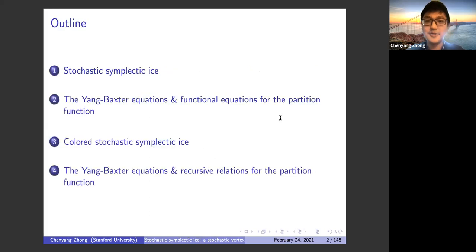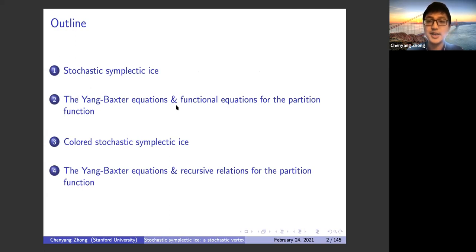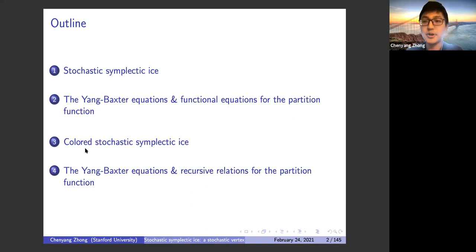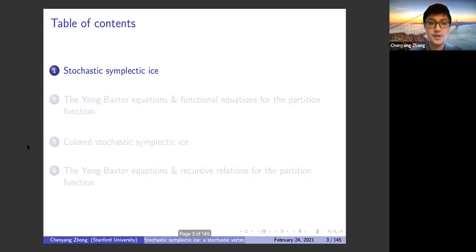Here is an outline of my talk. I will start from the uncolored stochastic symplectic ice and, after introducing the model briefly, talk about its solvability — namely, I will introduce four sets of Yang-Baxter equations. After that, I'll use those equations to derive functional equations for the partition function under some change of parameters. I will then introduce the colored stochastic symplectic ice model and derive recursive relations for the partition functions.